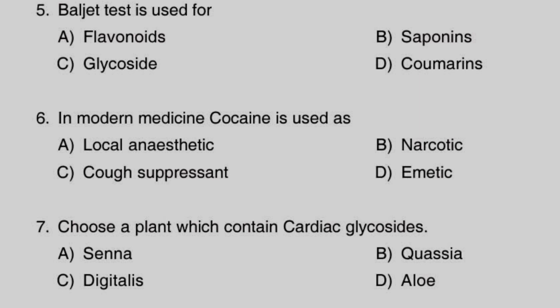Next question: Balget test is used for — Option A: flavonoids, Option B: saponins, Option C: glycosides, Option D: coumarins. The right answer is Option C, glycosides. Balget test is used for the identification of glycosides. The test for flavonoids is the Shinoda test, and for saponins it is the hemolysis test.